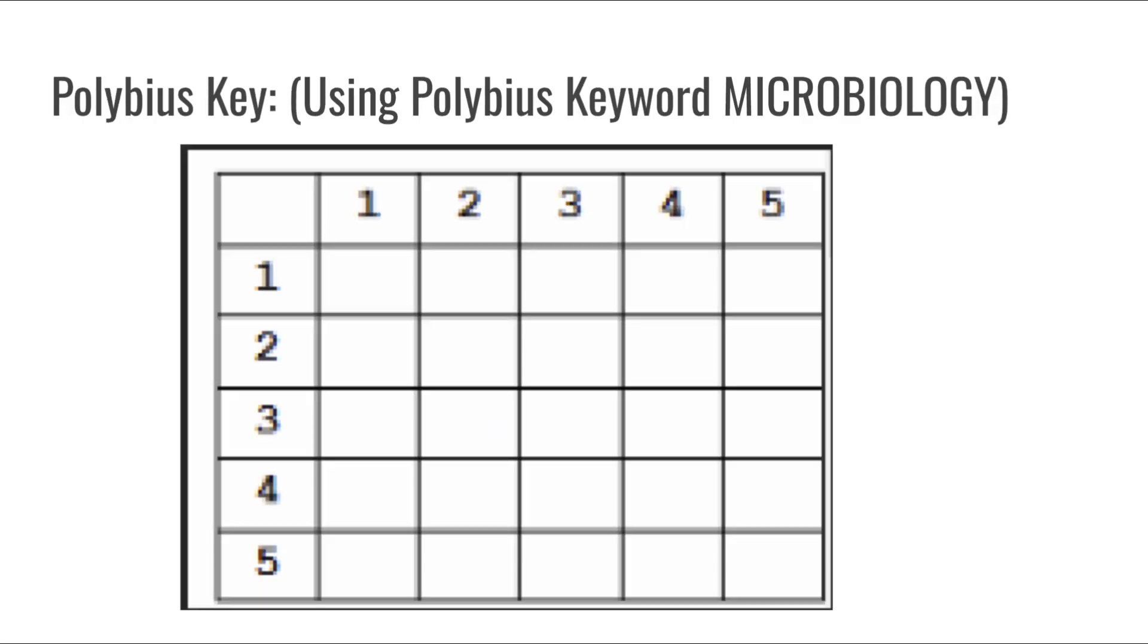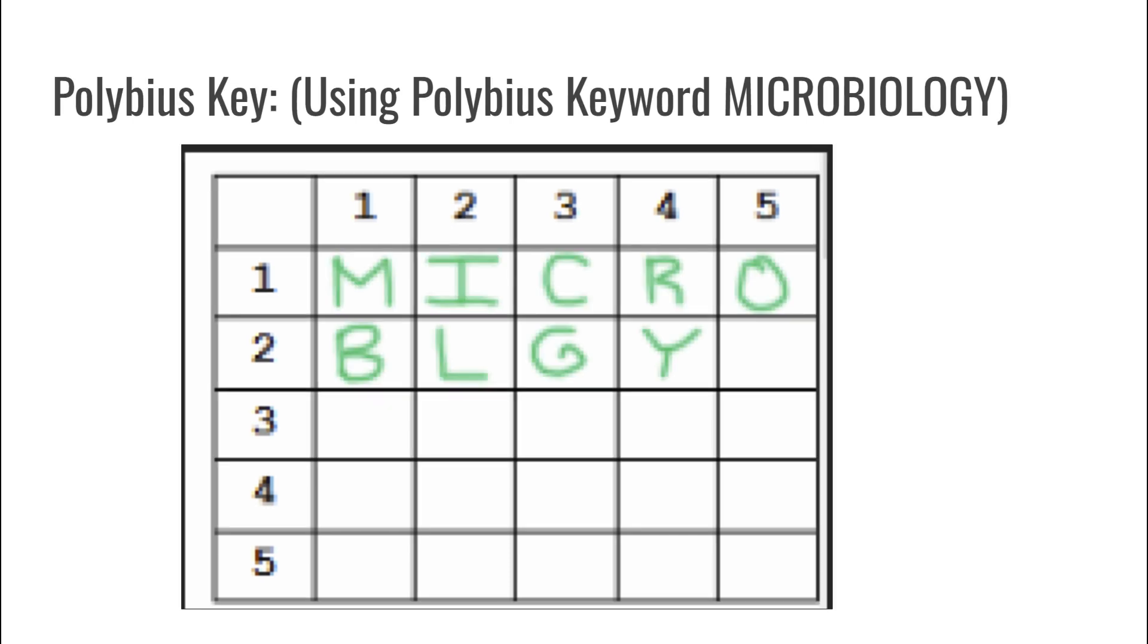Looking deeper into the polybius square, it is an alphanumeric table where each two digit number goes to a certain letter. Now we will put our polybius keyword into the square from the top left as if we are reading a book. Once the keyword is in the square you can see how some of the letters in microbiology are not shown. This is because once we already have used a letter we will not use it again and we skip ahead to the next letter.